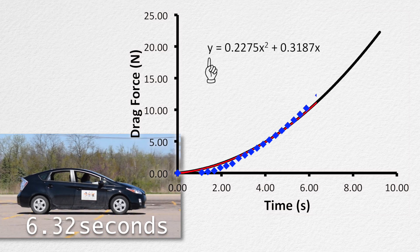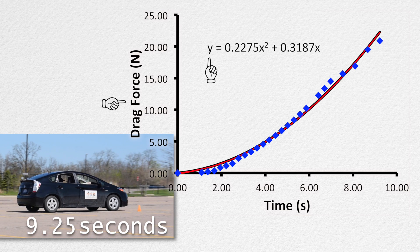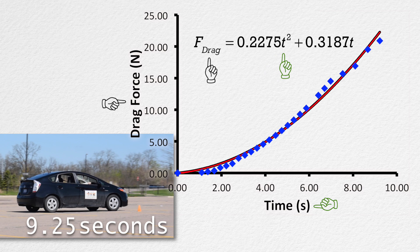However, we don't really have a y axis, instead we have a force of drag axis. And instead of an x axis, we have a time axis. Therefore, this equation should really be reported as the force of drag equals 0.2275 times time squared plus 0.3187 times time.